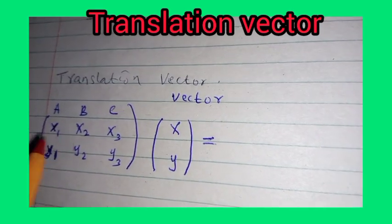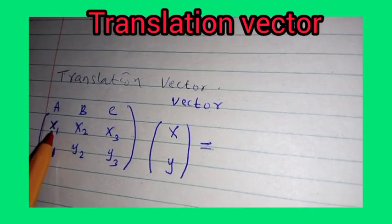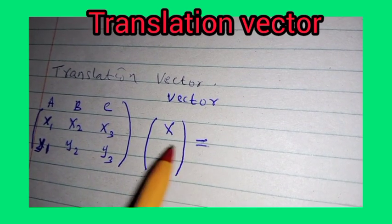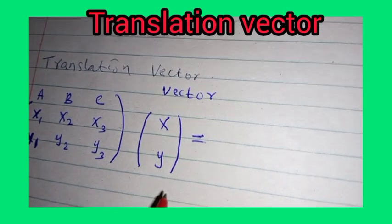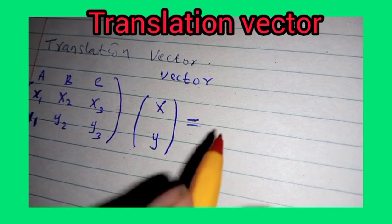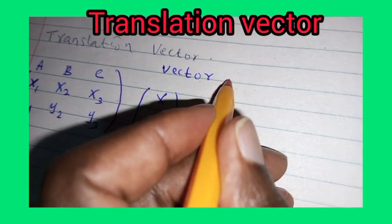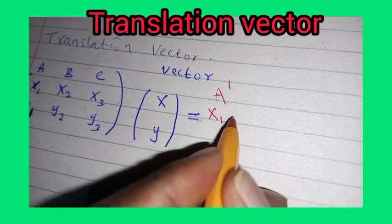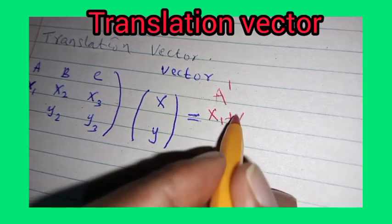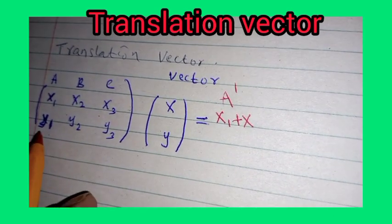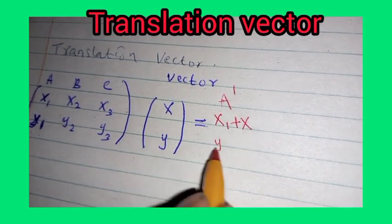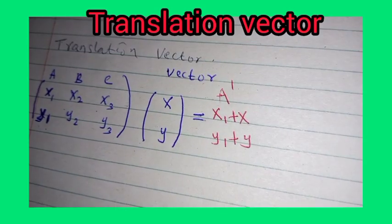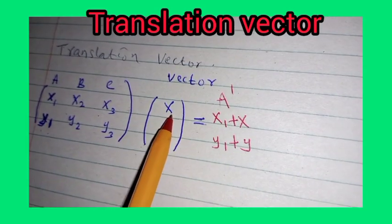To get the vector, you are given this object with coordinates x1, y1; x2, y2; x3, y3. So under this translation vector (x, y), the image of a — which I'm going to call a prime — will be given by (x1 + x, y1 + y). That is the image of object a under this translation vector.